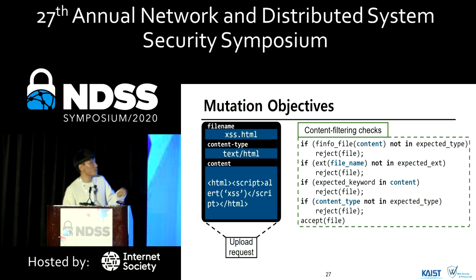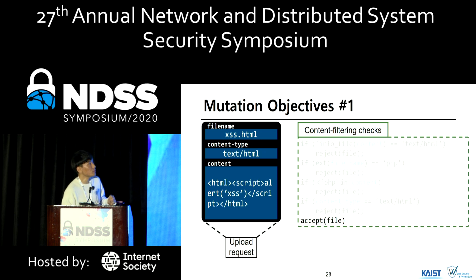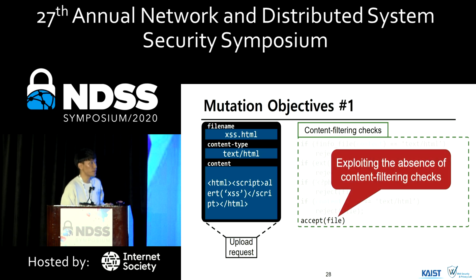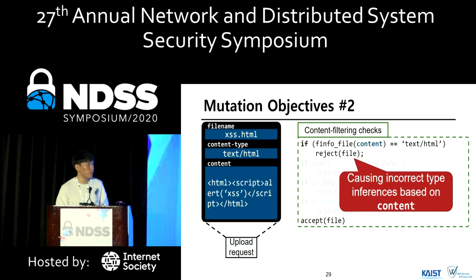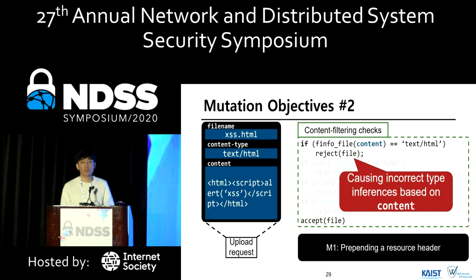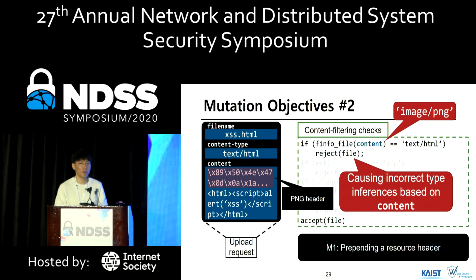Let's assume we have content filtering checks in a web application. We identified five objectives that trigger common mistakes in real-world content filtering checks. The first objective is to exploit the absence of content filtering checks — several applications do not perform any checks on incoming upload requests, so we achieve this by sending initial upload requests without any mutation. The second mistake is incorrect type inference based on content. The corresponding mutation operation M1 prepends a resource header — for example, prepending a PNG header to confuse file type signature. However, according to the content-sniffing algorithm in the browser engine, this file will be executed as HTML in the web browser.